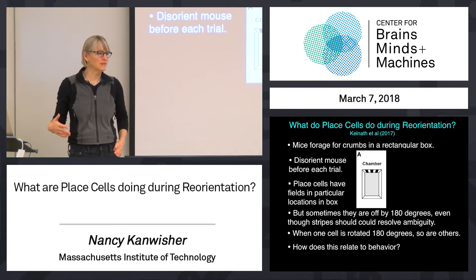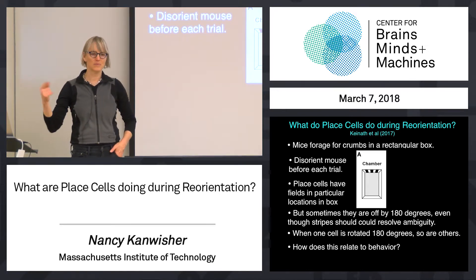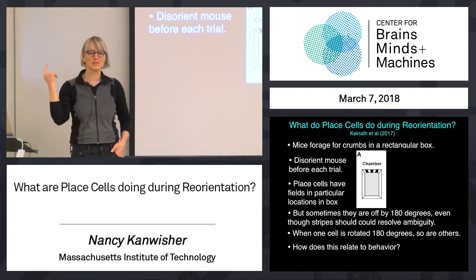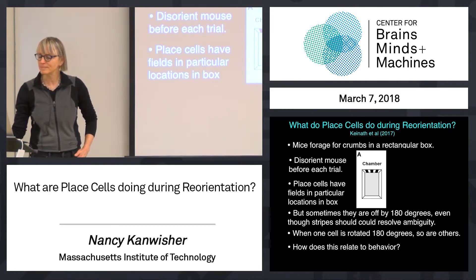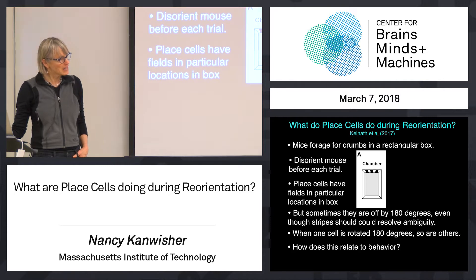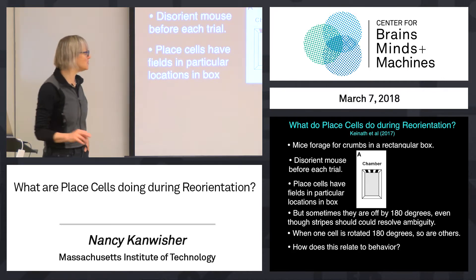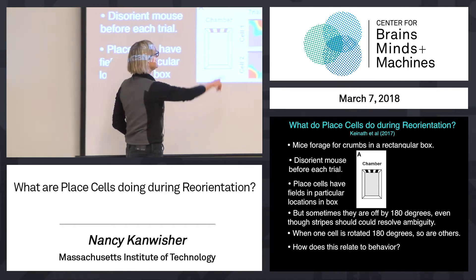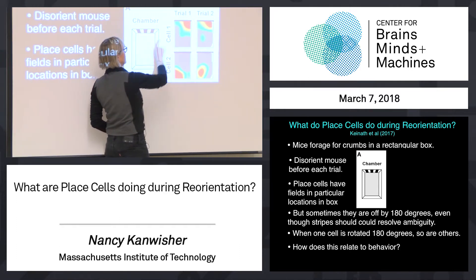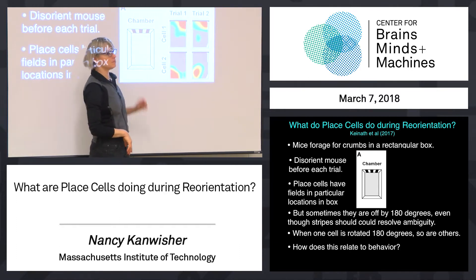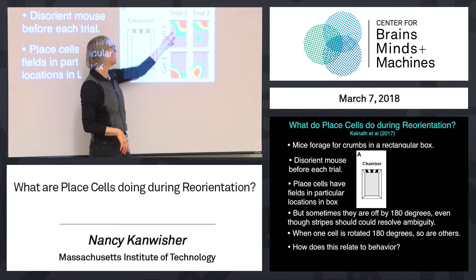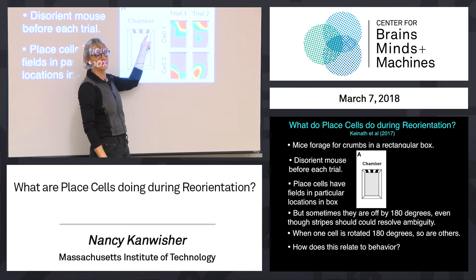For each trial, you take the mouse out and you disorient him — turn him around in the dark a bunch of times so he doesn't know which way he's facing. Then you map the place fields when you put him back in. And what you find is that the place fields are systematic.